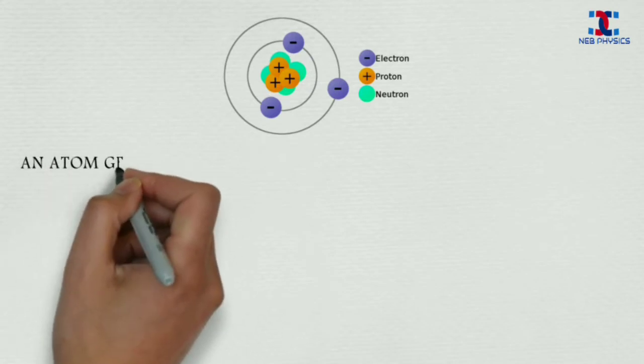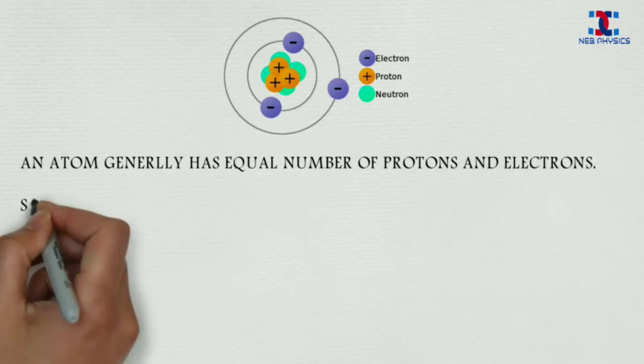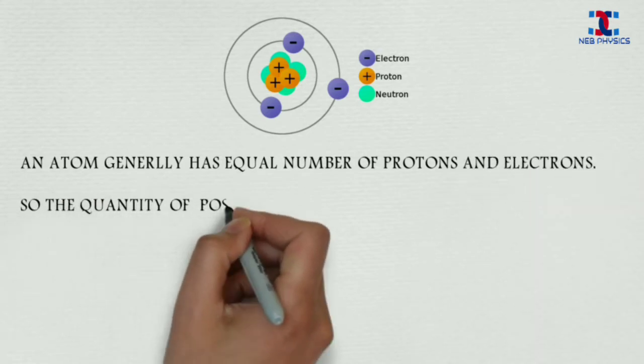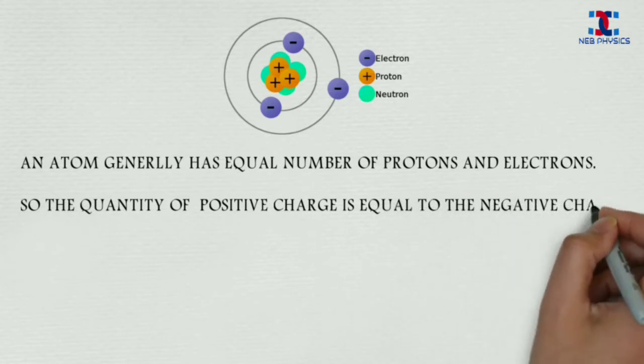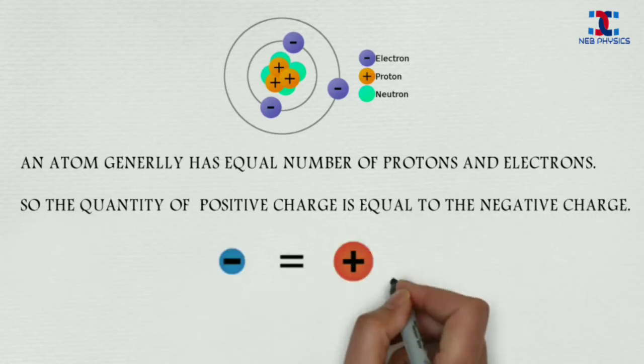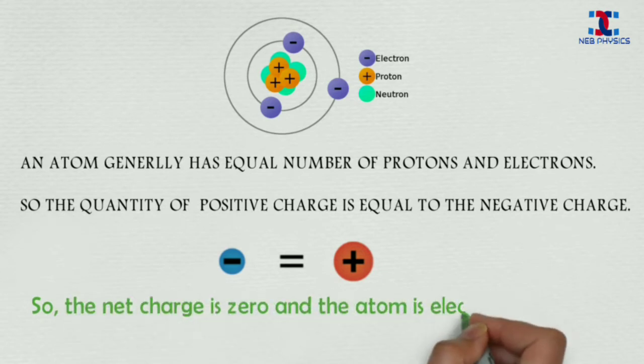When we look at an atom, it generally has equal number of protons and electrons. The quantity of positive charge is equal to the quantity of negative charge. The net charge is zero and the atom is electrically neutral.